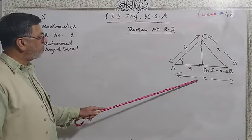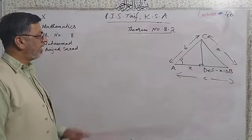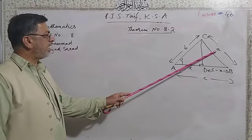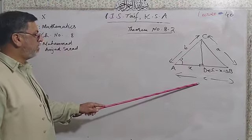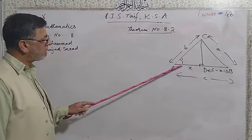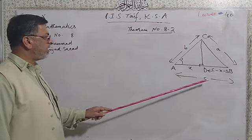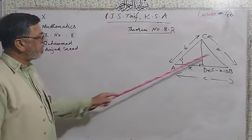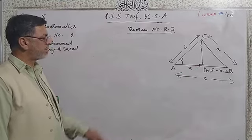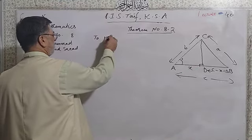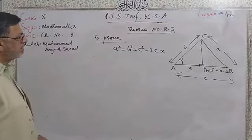To prove: BC² = AB² + AC² − 2·AB·AD, or equivalently a² = b² + c² − 2cx. The square of the side opposite the acute angle equals the sum of squares of the two other sides diminished by twice the product of one side and the projection of the other.